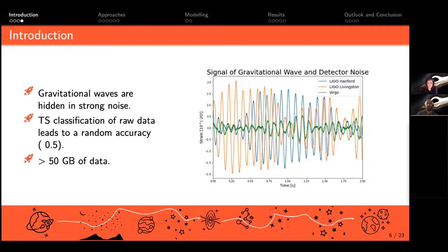On the right hand side we see an example of the data we face. What we see here is actually not the gravitational waves, it's just the noise of the detectors. The gravitational waves are buried on a much lower scale inside these curves, so we can't see them with the naked eye.